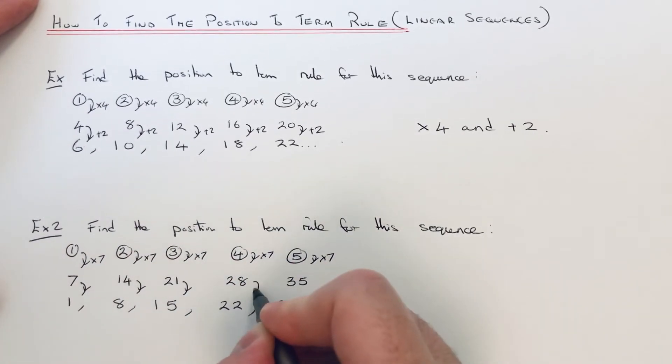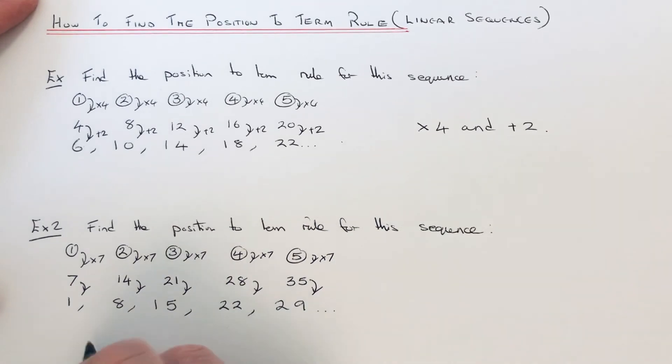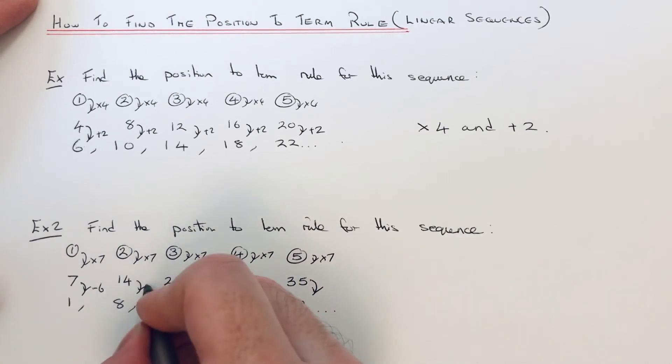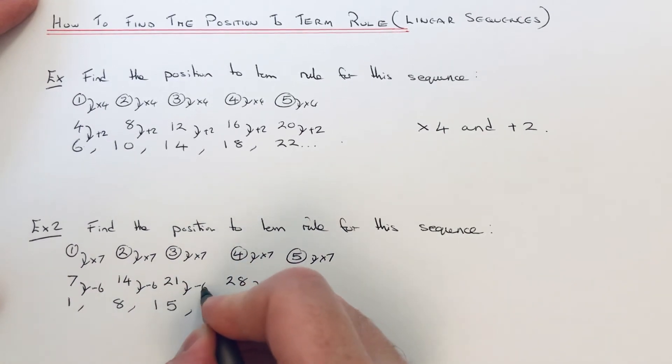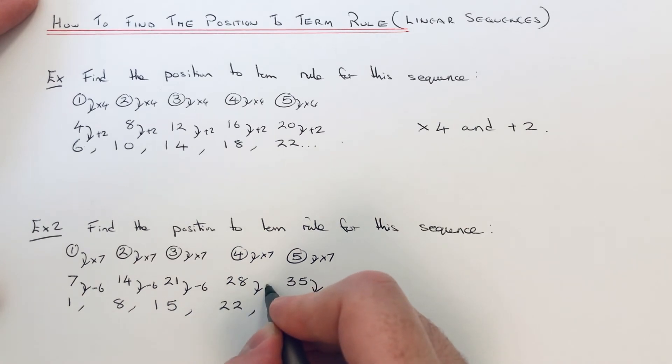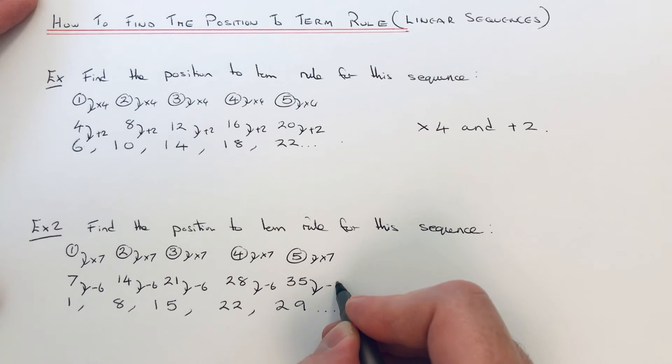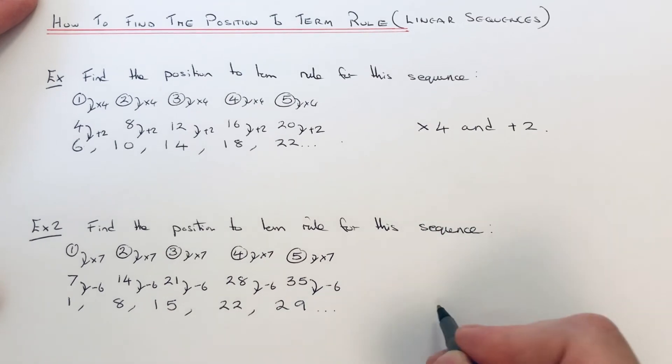7 take away 6 is 1, 14 take away 6 is 8, 21 take away 6 is 15, 28 take away 6 is 22, and 35 take away 6 is 29.